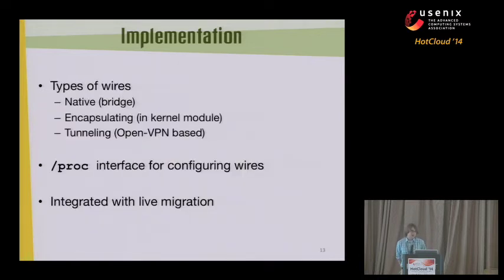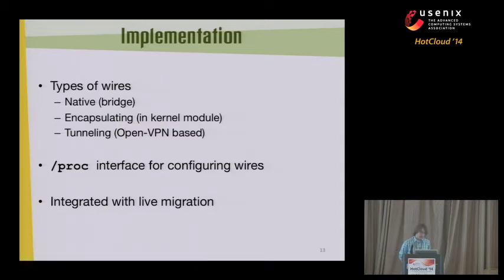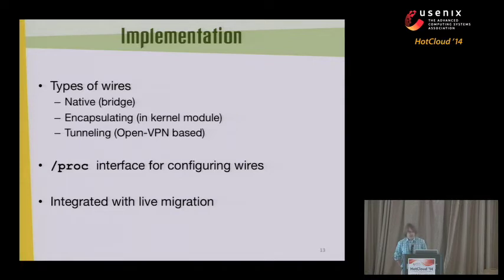We implemented different types of wires. We bridge them together if they're on the same machine. We have an encapsulating wire which adds a VXLAN header to packets, implemented in a kernel module that we wrote. And then we have a tunneling wire which uses OpenVPN. The way we configure the wires is through a proc interface - it's very simple, a connect/disconnect type thing. We interface with proc to say where the other end of each endpoint is, and we integrated this with live migration by simply updating the endpoints on migration complete.